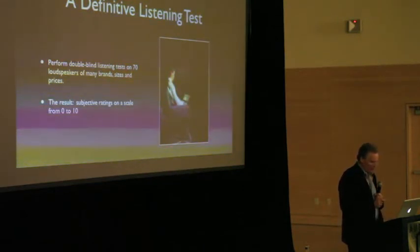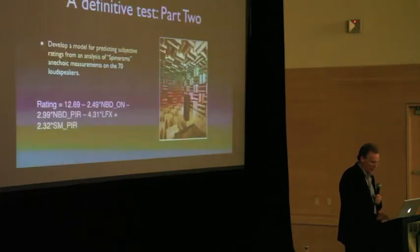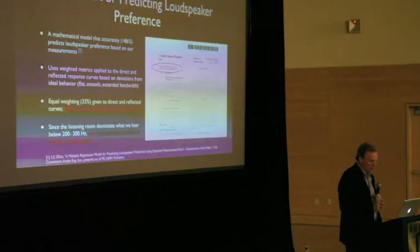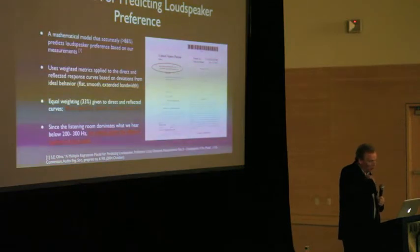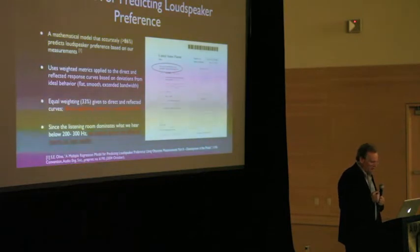So, we tested their products and then we tested 70 different loudspeakers. And this went over the course of 18 months. And we had listeners rate each speaker on a scale from 0 to 10. And then based on these measurements that we do, I was able to come up with a model that weights each of these measurements. And I could predict the preference rating with an accuracy of about 86%. So, what we found was that there's equal metrics applied to the direct sound. So, the first sound that arrives at a listener is really important. But also, the direct and reflective responses are also important. So, you can't just look at a single curve to predict how good a speaker sounds.